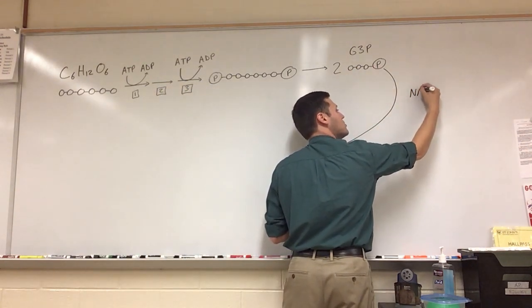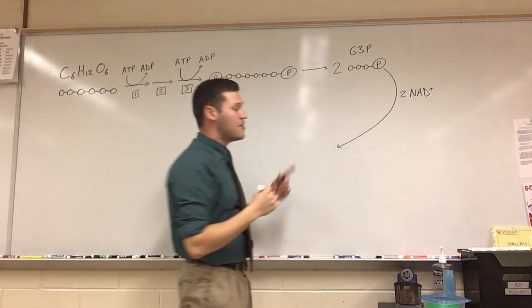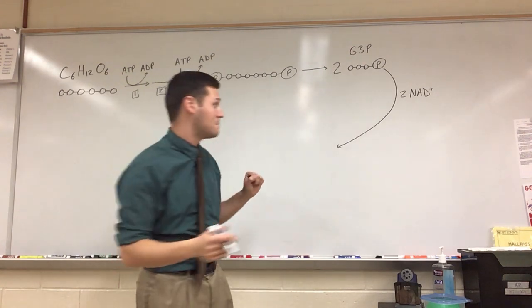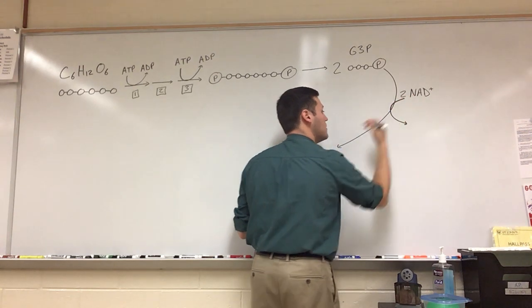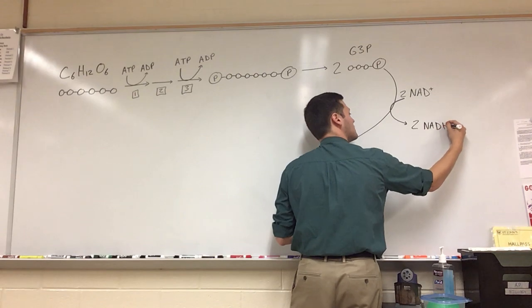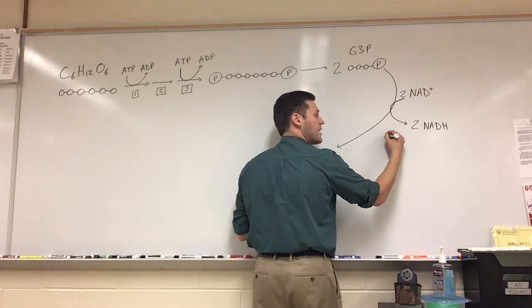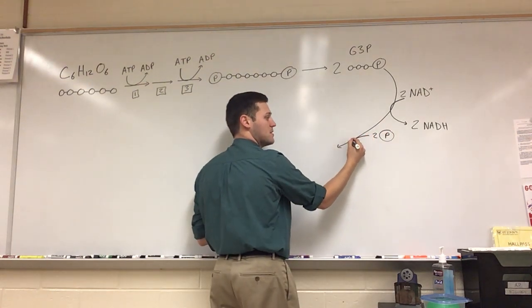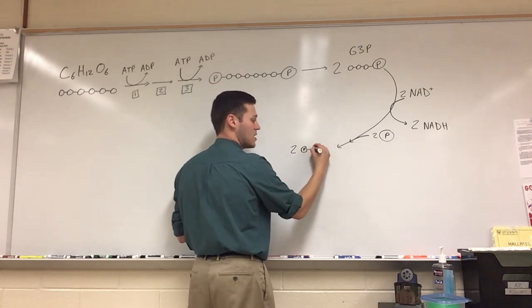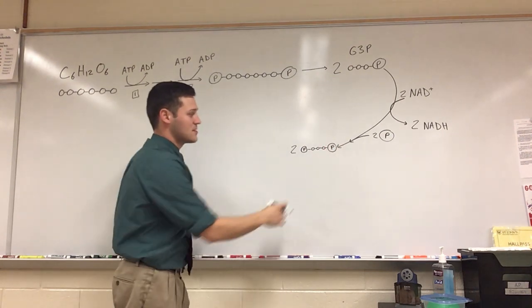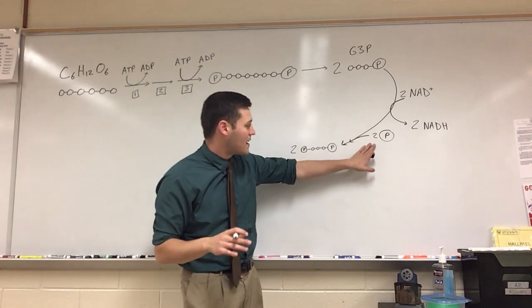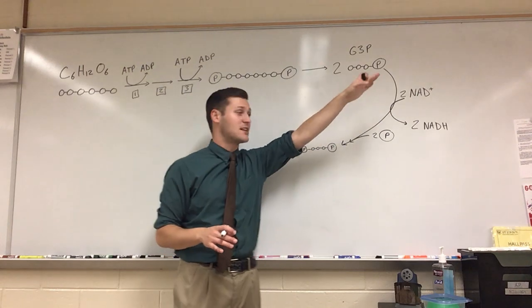So we have our two G3P molecules. And for these two G3Ps, we have two NAD pluses. And those two NAD pluses, which are coenzymes, very similar to NADPH or NADP plus in photosynthesis. We have two NAD pluses come through, pick up electrons, also pick up some hydrogens. And we have two NADH. And in this same process, we kind of pull in two phosphates, two additional phosphate groups. And what we are left with are two molecules that have a phosphate on this end, three carbons, and a phosphate on this end. So hopefully you see that by adding two more phosphates, we are going to go from G3P, two molecules with only one phosphate, to two molecules with two phosphates.